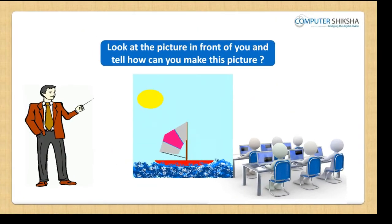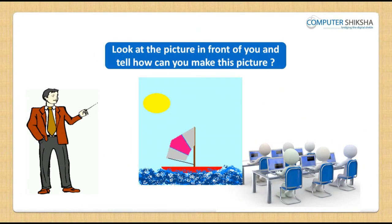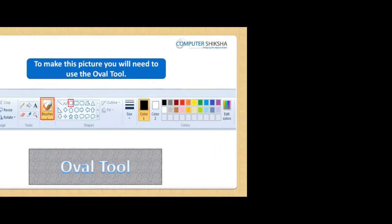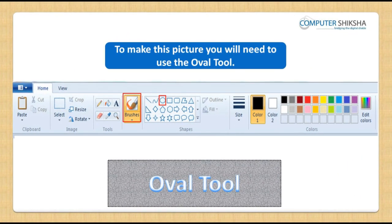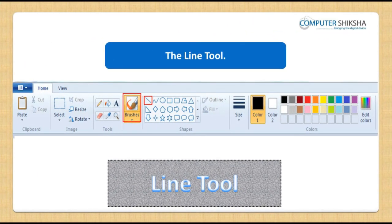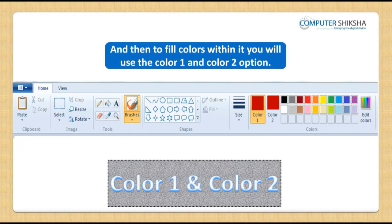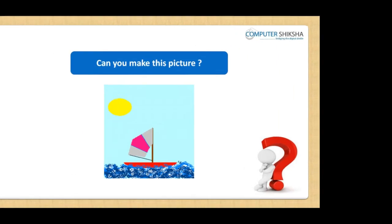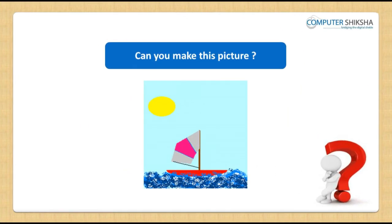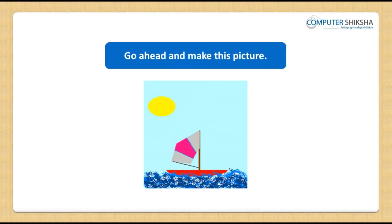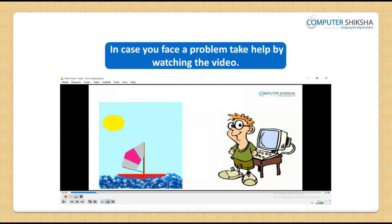Look at the picture in front of you and tell how you can make this picture. To make this picture, you will need to use the Oval Tool, the Line Tool, the Pencil Tool, and the Color 1 and Color 2 options. Can you make this picture? Go ahead and make it. In case you face a problem, take help by watching the video. Let us watch and learn how we can make this colorful picture of a sailboat in the sea.